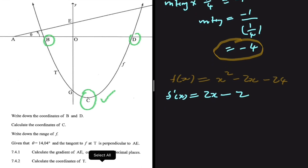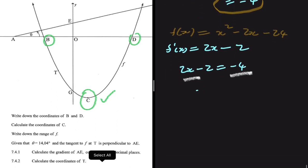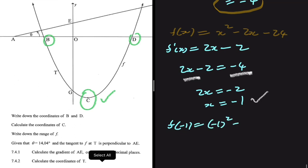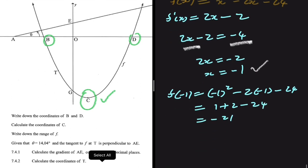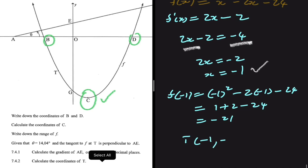We know the gradient at T is -4, so we set 2x - 2 = -4. We're finding the x-value where the gradient equals -4, which occurs at T. Solving: 2x = -2, so x = -1. Substituting into f(x): f(-1) = (-1)² - 2(-1) - 24 = 1 + 2 - 24 = -21. So the coordinates of T are (-1, -21).